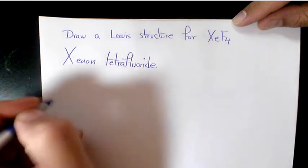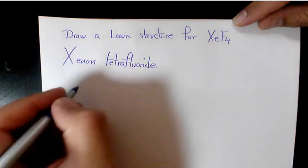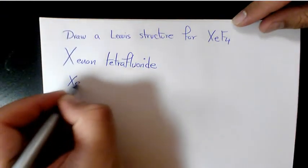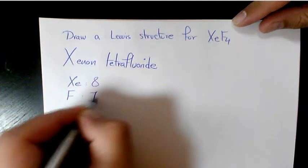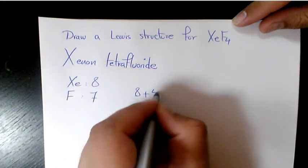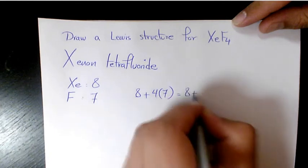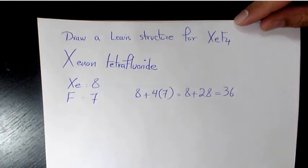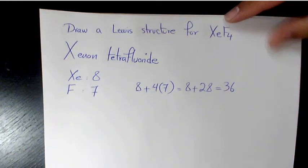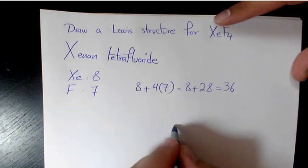First thing we're going to do, we need to count the total number of valence electrons. Xenon is 8, fluorine is 7, so it's going to be 8 plus 4 times 7. That's going to be 8 plus 28, which equals 36 electrons.